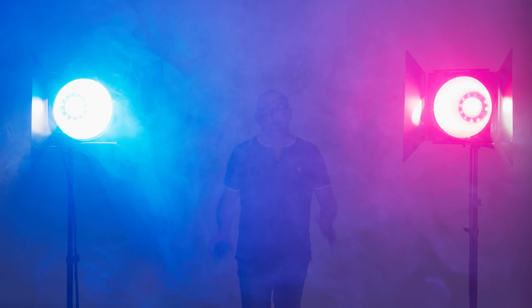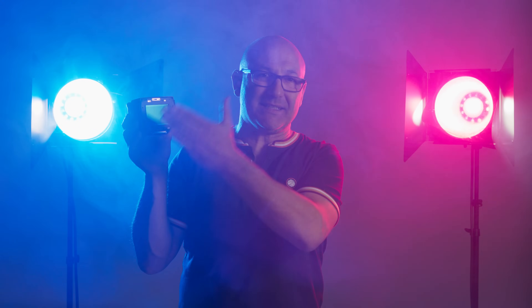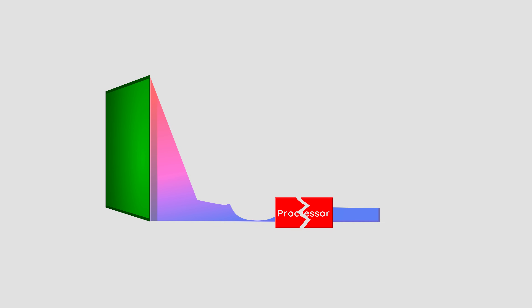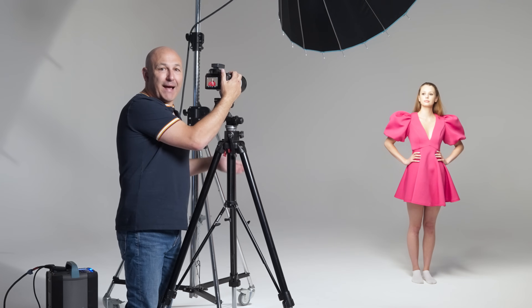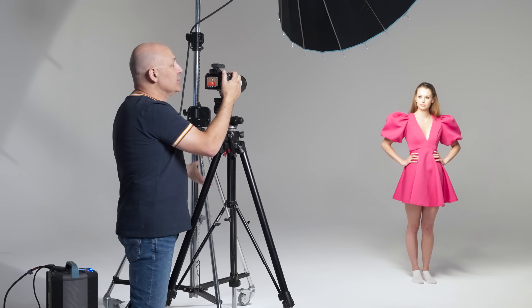Unfortunately, standard electronic shutters worked in much the same way as conventional mechanical shutters, as only part of the sensor could be exposed at one time. This was due to the huge processing power needed to process the signals from all those photons hitting the sensor — it just couldn't handle it all simultaneously. Meaning we were left with a similar problem of a scan across the sensor. But this time there was just no shutter in the way, so if you went above the maximum sync speed on an electronic shutter, the flash would fire but only part of the sensor was actually active when it did.